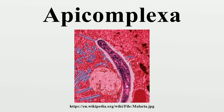The Apicomplexa are a large phylum of parasitic protists. Most of them possess a unique form of organelle that comprises a type of plastid called an apicoplast and an apical complex structure. The organelle is an adaptation that the apicomplexan applies in penetration of a host cell. The Apicomplexa are unicellular and spore-forming. All species are obligate endoparasites of animals, except Nephromyces, a symbiont in marine animals originally classified as a chytrid fungus. Motile structures such as flagella or pseudopods are present only in certain gamete stages.